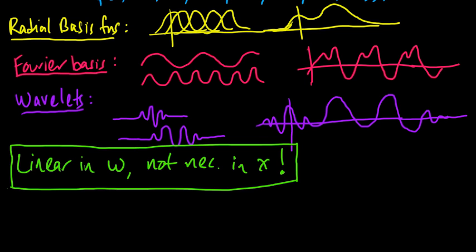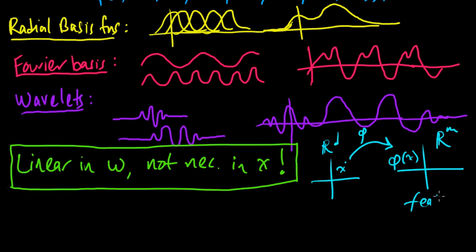A way to think about this is you're taking your original d-dimensional space, R^d, with x living here, and you map x to some other space R^m. So this goes to phi of x, and our map is phi. This is the feature space.